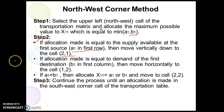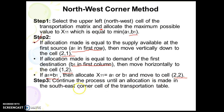If the allocation made equals the demand of the first destination (b1) in the first column, then move horizontally to cell 12. If a1 equals b1, allocate x11 equal to a1 or b1 and move to cell 22. Continue this process until an allocation is made in the southeast corner cell of the transportation table.